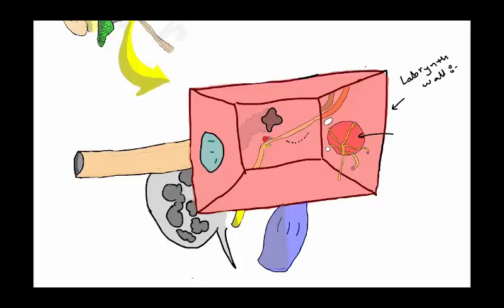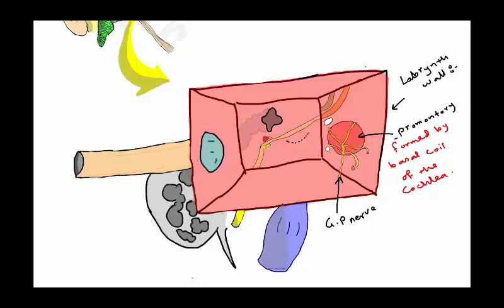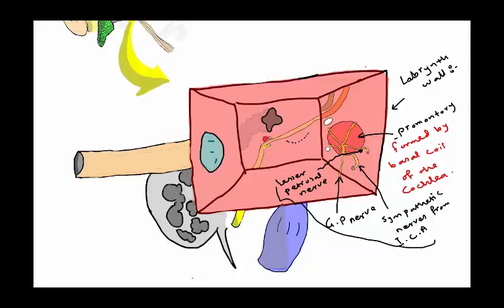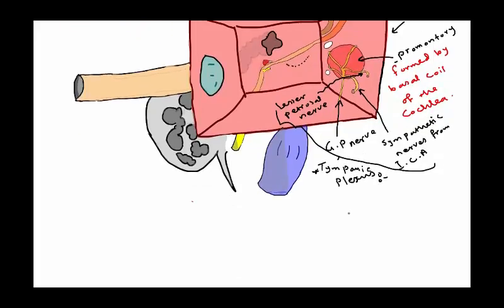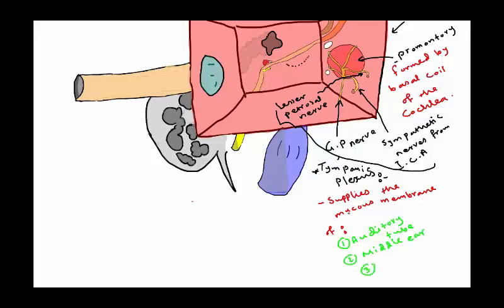The medial wall is the labyrinthine wall, and the prominent structure is called the promontory, which is formed by the basal coil of the cochlea. On it runs the glossopharyngeal nerve and a sympathetic nerve from the internal carotid artery, as well as the lesser petrosal nerve. Together these form the tympanic plexus, which supplies the mucous membranes of the middle ear structures, the auditory tube, and the mastoid air cells.